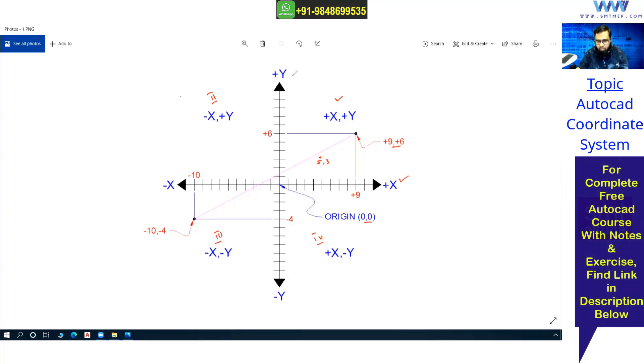In the second quadrant, Y is positive but X is negative. Left side from the origin means negative; right side is positive. From the origin, going up is positive Y; going down is negative Y. In the third quadrant, both are negative: minus X, minus Y.